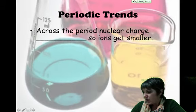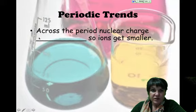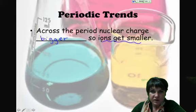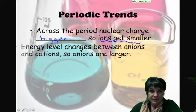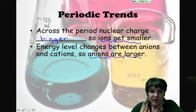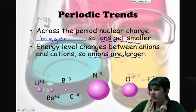Let's look at this periodic trend across the period. The nuclear charge is going to get bigger. And as the nuclear charge gets bigger, the ions, cations, get smaller. The energy level changes between anions and cations, so that's what makes the anions larger. A cation loses the electrons and goes back to a lower energy level.